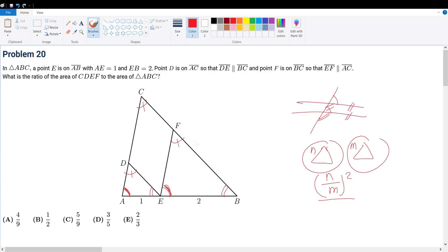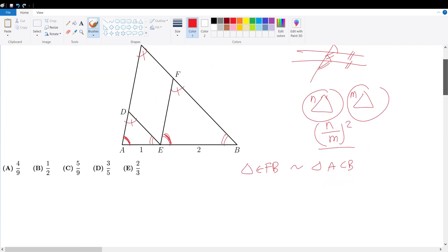If I were to have EFB, let's compare that to triangle ABC. So triangle EFB compared to triangle ACB - we know the side lengths here. EB is 2 and AB is 3, that's the entire length.